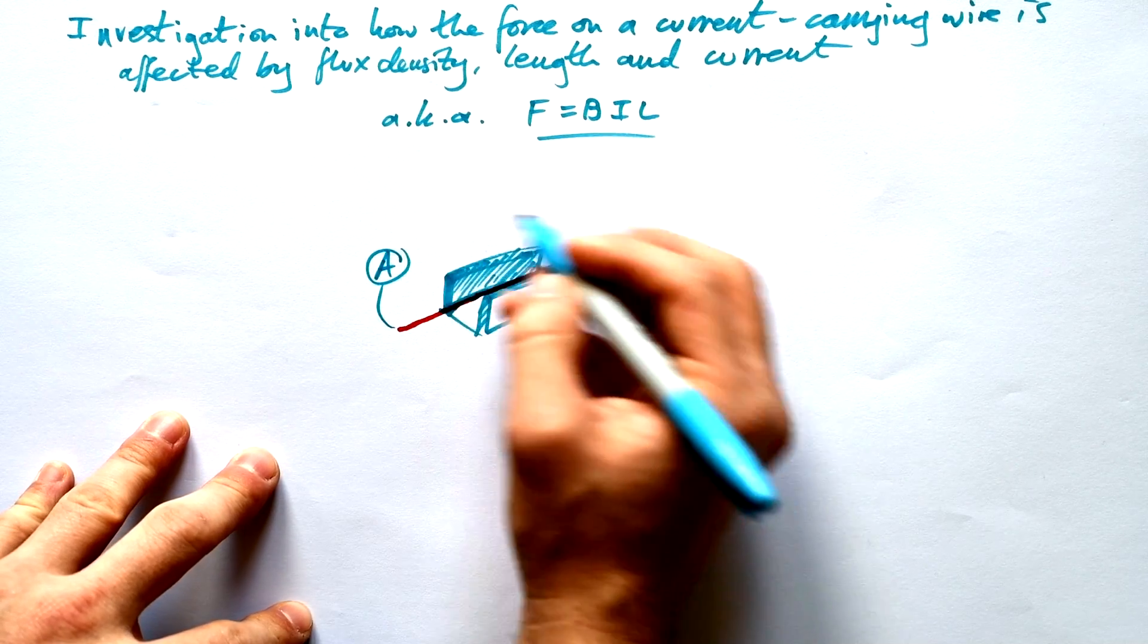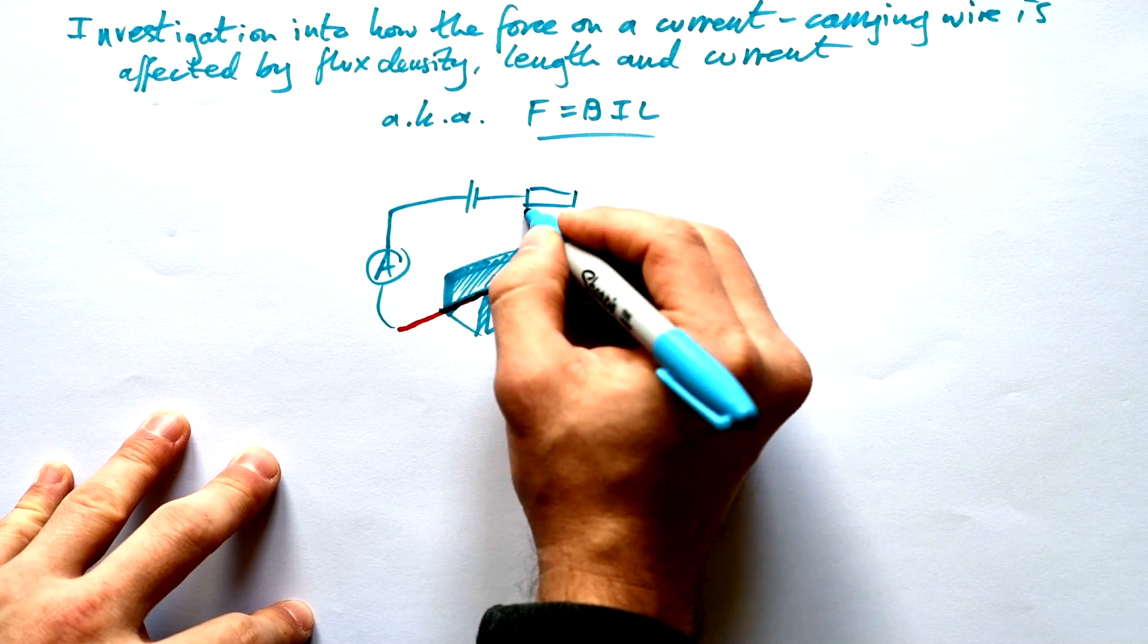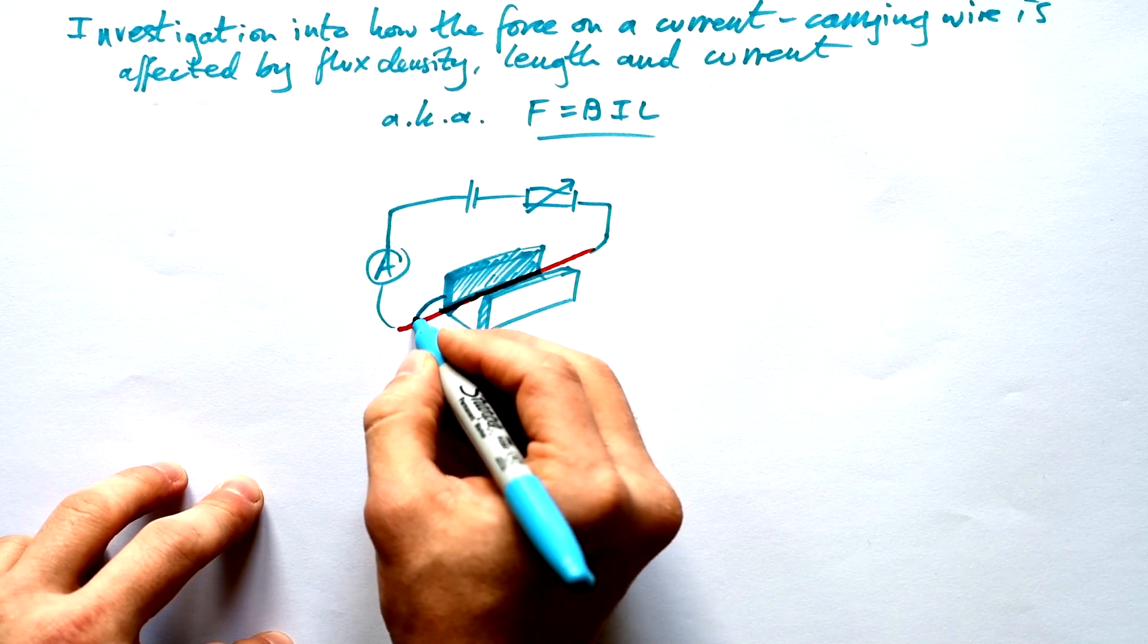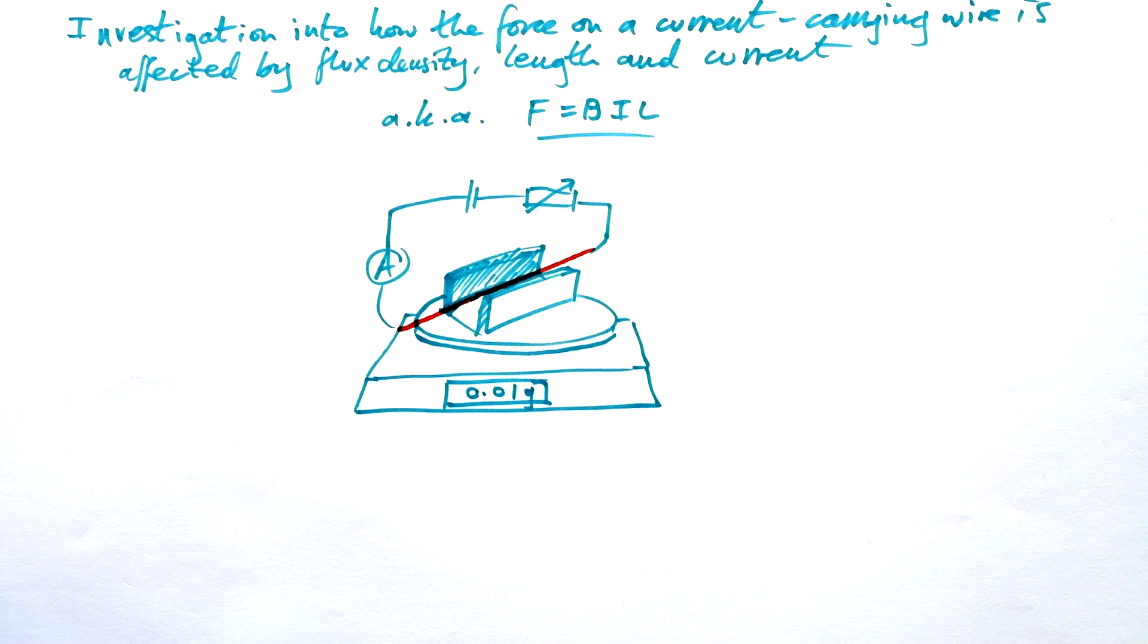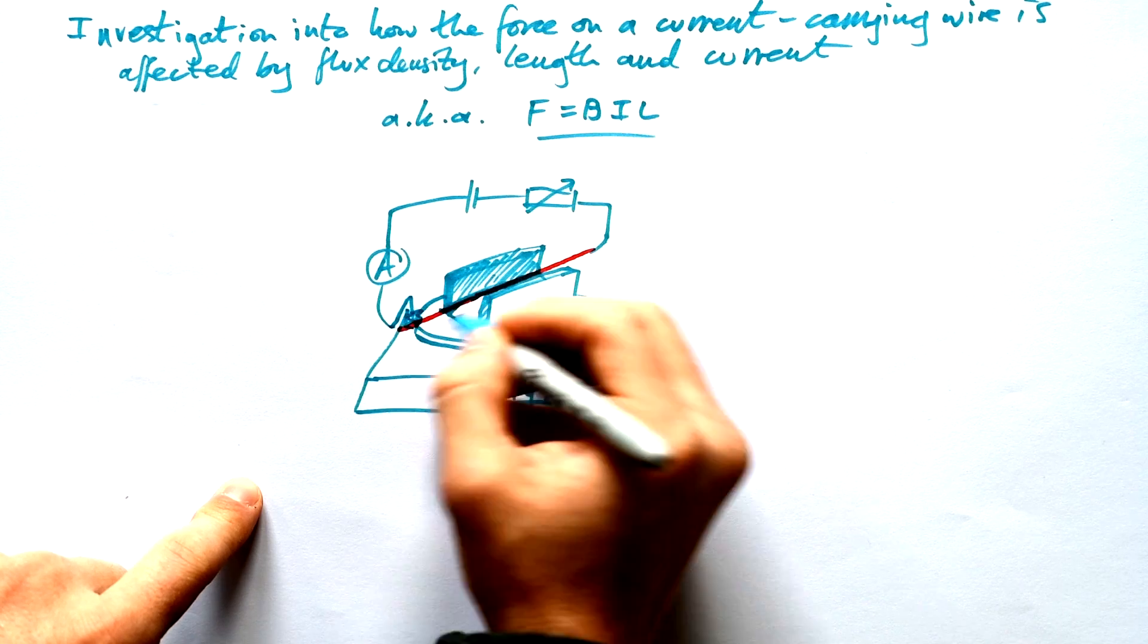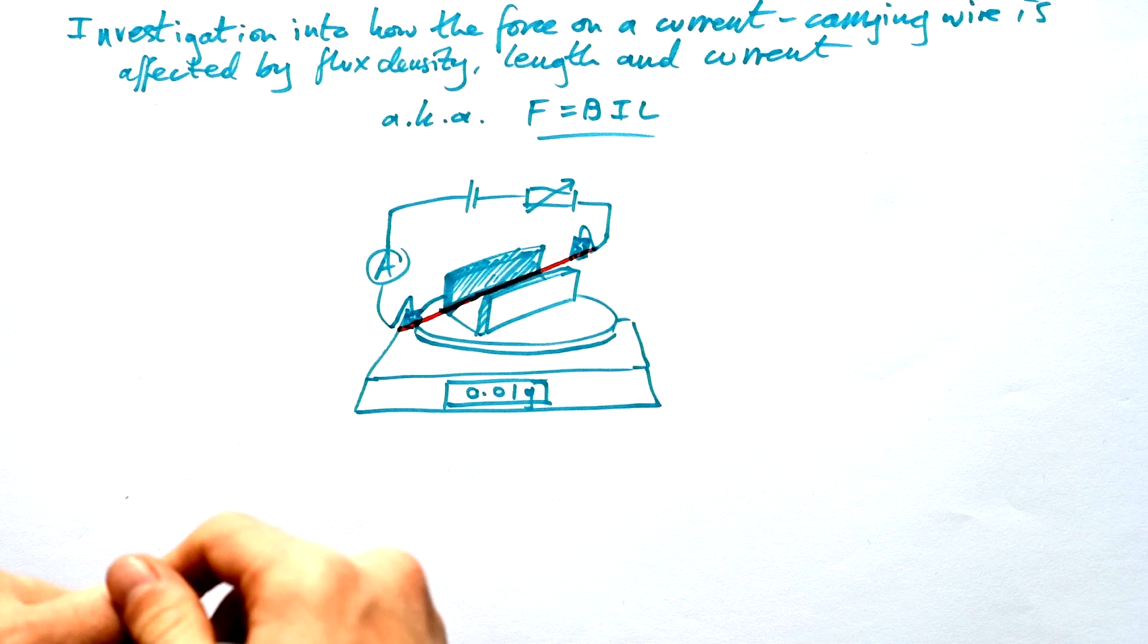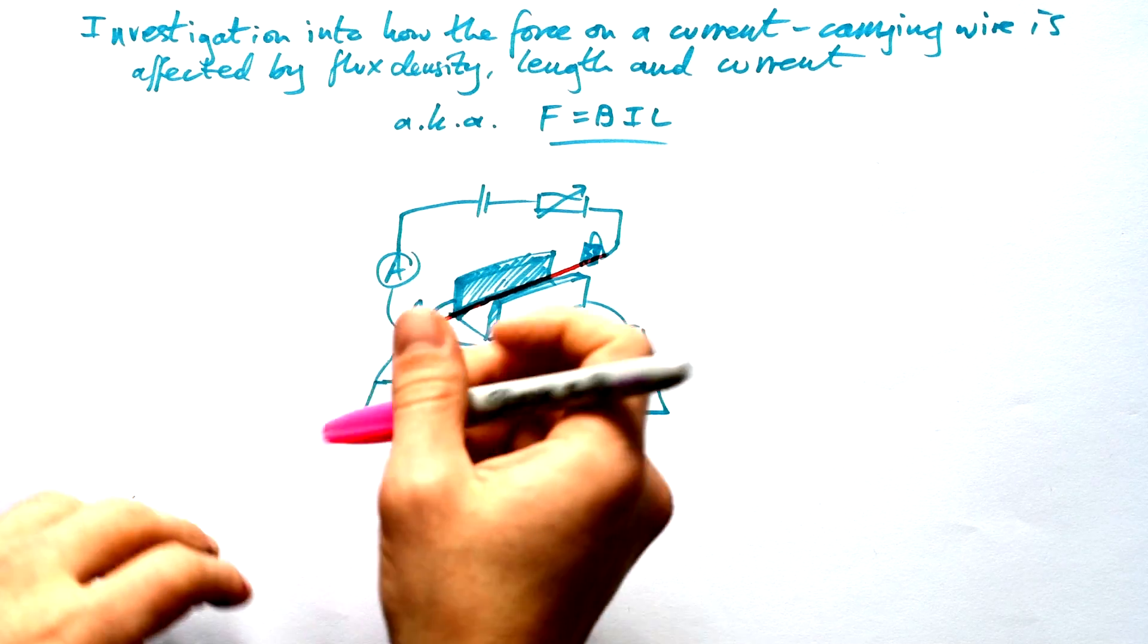We of course need an ammeter in there to record the current and if you want to change the current then you should have a variable resistor in there as well. This is going to be on top of a top pan balance. You want the balance to have the precision or resolution of 0.01 grams and we're going to attach our wire to the circuit using crocodile clips. We do also want to clamp it in place so it doesn't move. If it does move that can mess up the experiment.